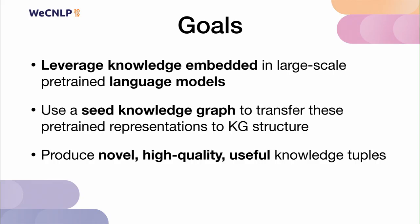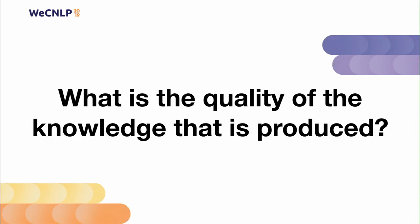Our goals in this work were to find a way to leverage the knowledge embedded in large-scale language models and use a seed knowledge graph to transfer these pre-trained representations to a desired KG structure, ultimately to produce novel, high-quality, and useful tuples. We ran this experiment on two English language knowledge graphs: ConceptNet and Atomic. The first question we were able to answer is: what is roughly the quality of the knowledge that can be produced with current approaches?